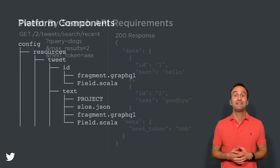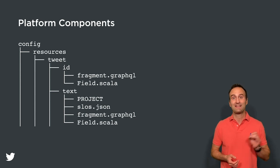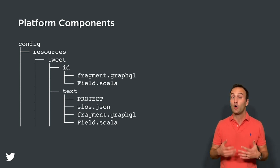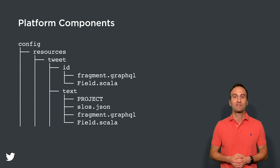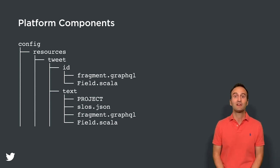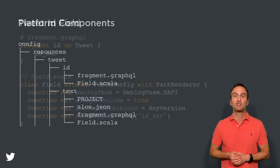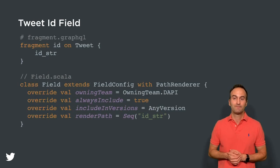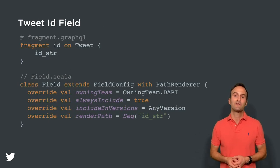Our requirements will need us to create a tweet resource which has an ID and a text field that are always returned by default. On screen, you can see where both of these resource fields would be defined in our common config directory. First, let's define the tweet ID field — on the top of the screen, you can see the contents of the fragment.graphql file.